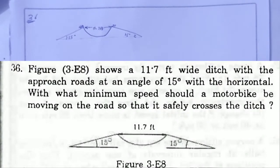H.C. Verma Solution Chapter 3 Rest and Motion Kinematics Question No. 36. Figure shows 11.7 feet wide ditch with the approach road at an angle 15 degree with the horizontal.